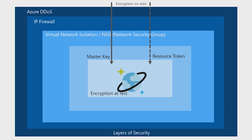The third layer is after IP firewall and VNet — you still have to have the master keys to access Cosmos DB. And then all the data is encrypted on the wire and encrypted on the disk. You don't have to do anything, no configuration needed. Everything is encrypted. It is a very, very secure database.